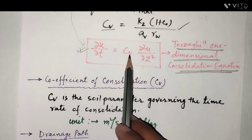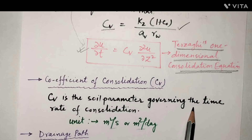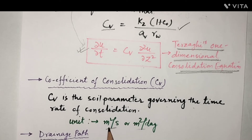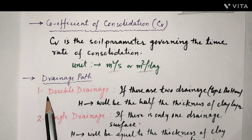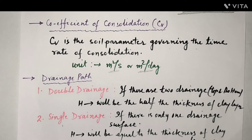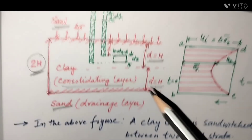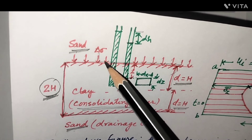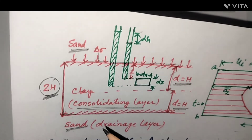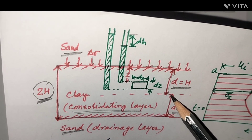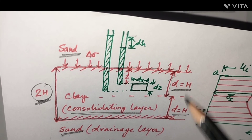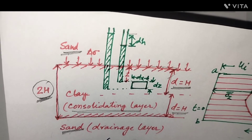The coefficient of consolidation Cv is the soil parameter governing the time rate of consolidation. Its units are m²/s or m²/day. An important term is drainage path, which may be double drainage or single drainage. In double drainage, water escapes from both the top and bottom, so a water particle must travel a maximum distance d = H, which is half the thickness of the layer.